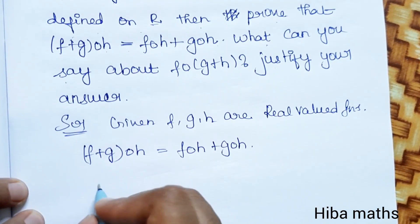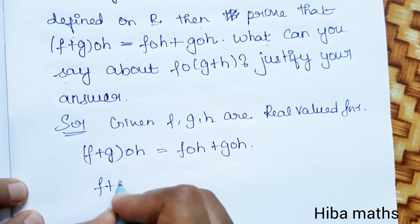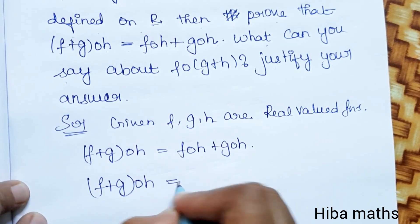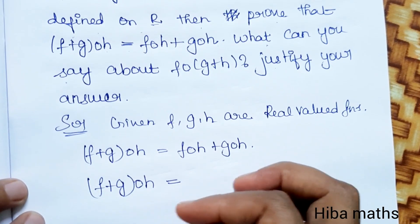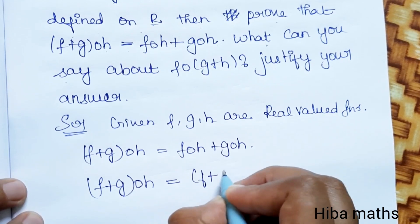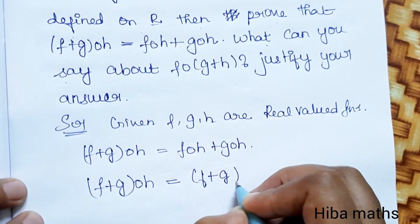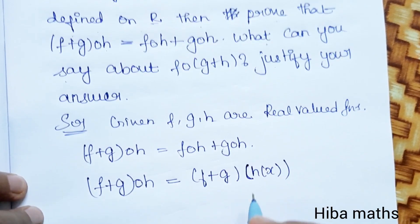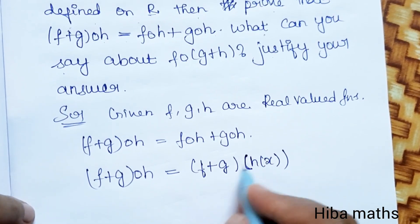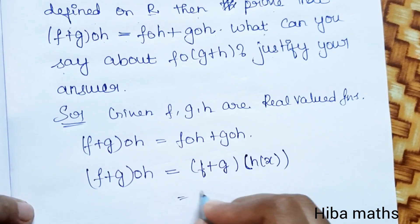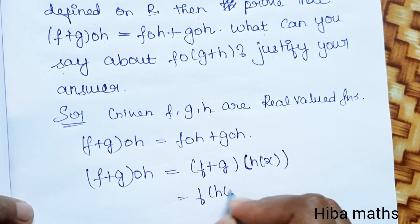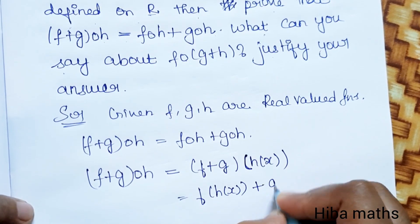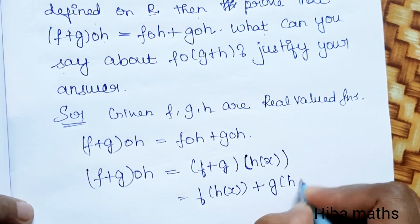So taking h, let us show: (f+g) of h, which is equal to (f+g) of h(x). Since h(x) is there, this becomes f of h(x) plus g of h(x), which is f∘h plus g∘h. This completes the proof.